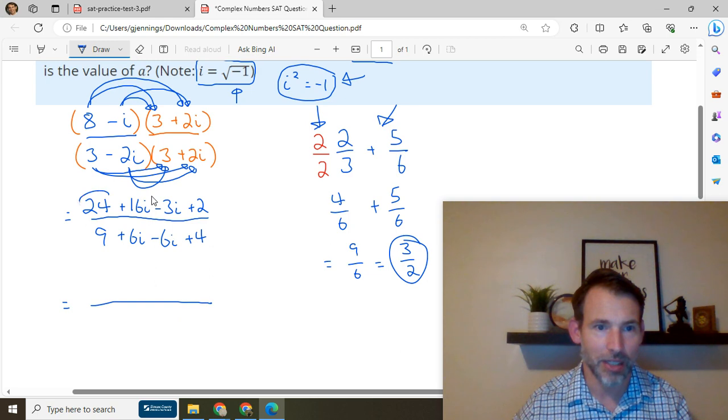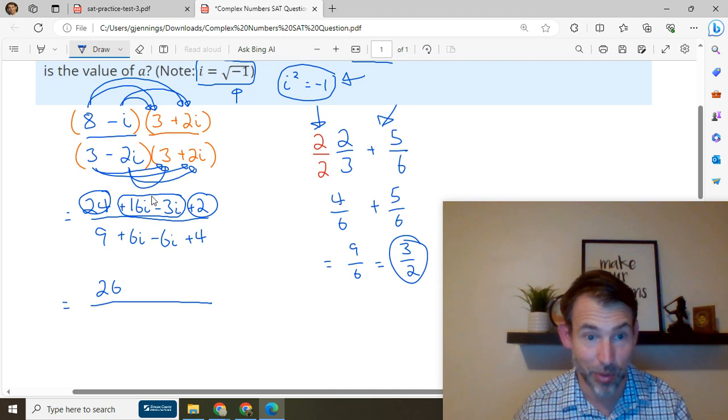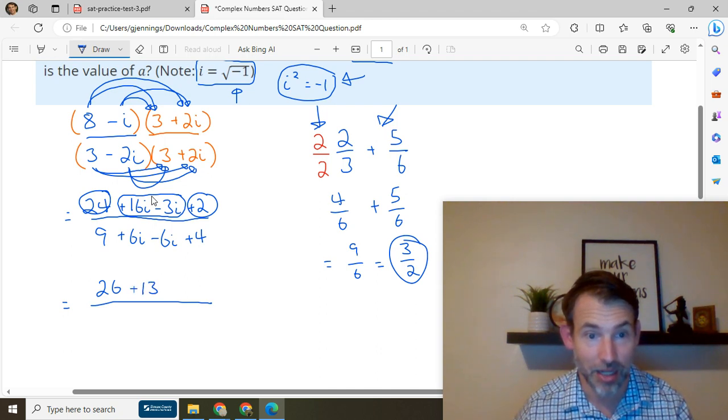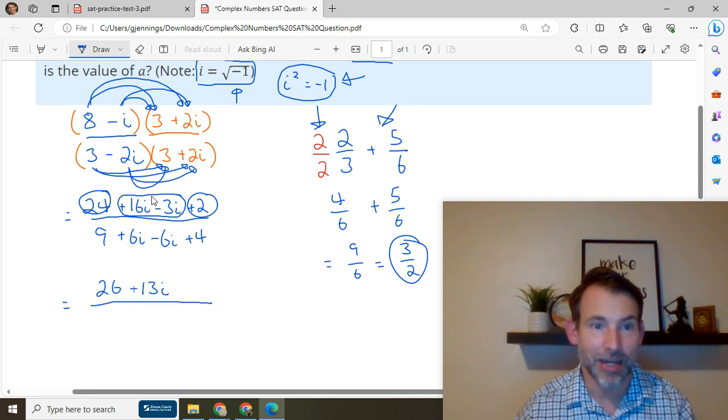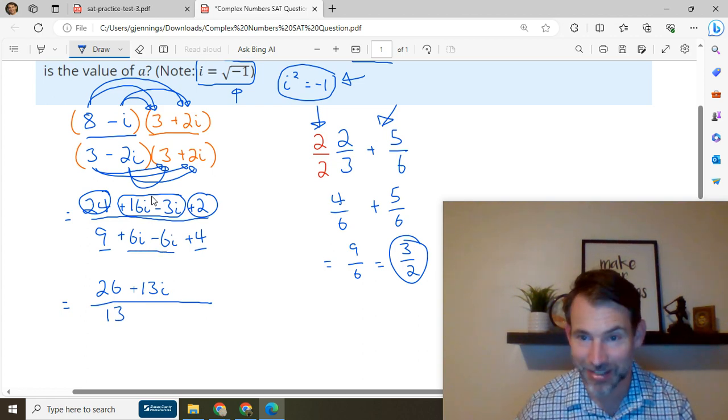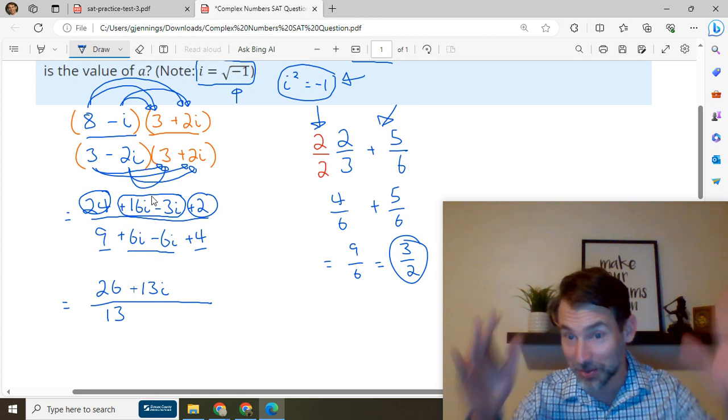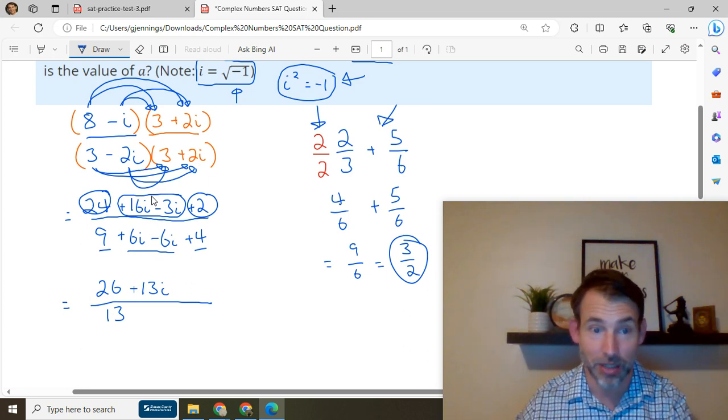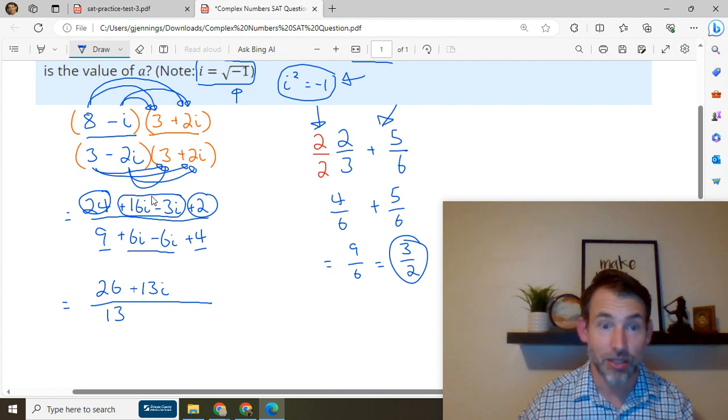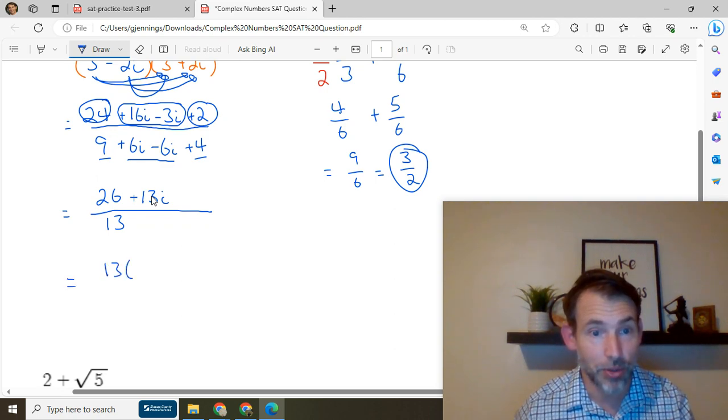So let's simplify the numerator first, and then I'll show you the magic of the denominator. So 24, we're going to take this 24 and we're going to add this two. That gives us 26. We're going to take this 16 i and take away three i. That's like 16 apples minus three apples. We will have plus 13 i's. All right. And then down here, this nine and the four go together, that gives us 13. And then the plus six i minus six i is just zero. So those inconvenient i's in the denominator disappear. And we're just left with 13. So this is the whole expression, what it looks like 26 plus 13 i over 13. So now we can factor a 13 out of the top.